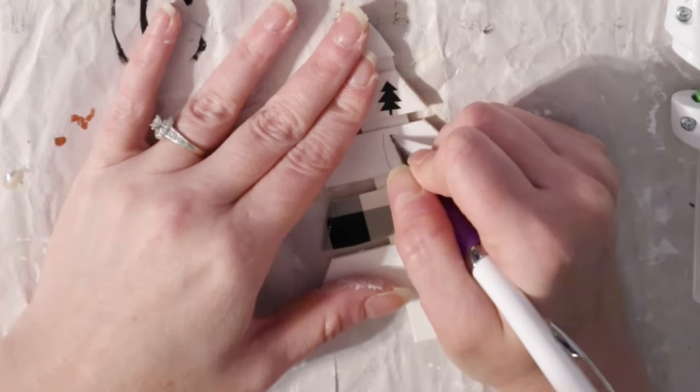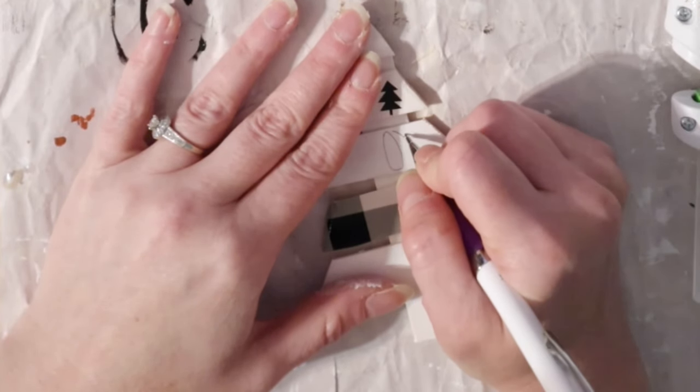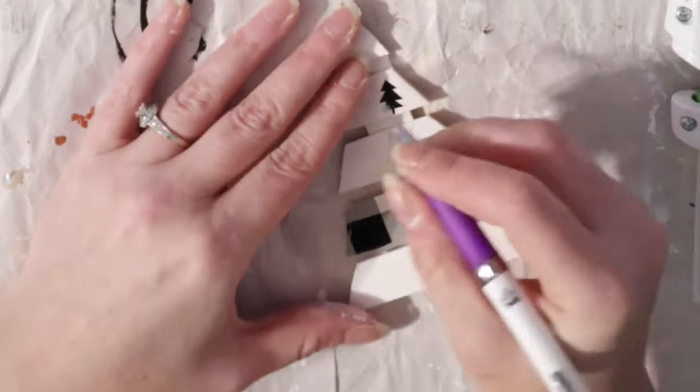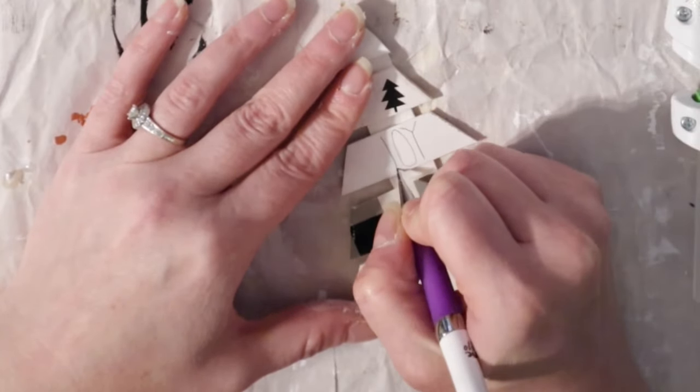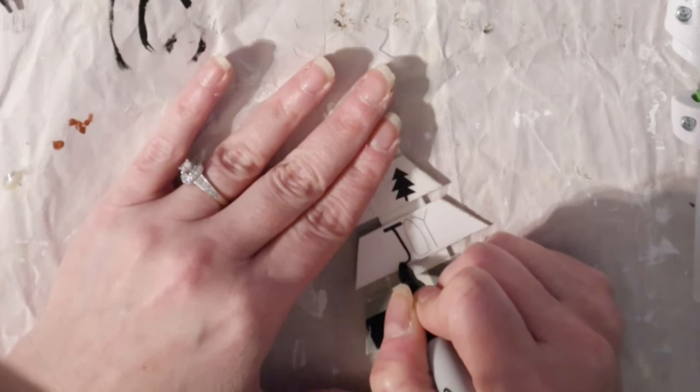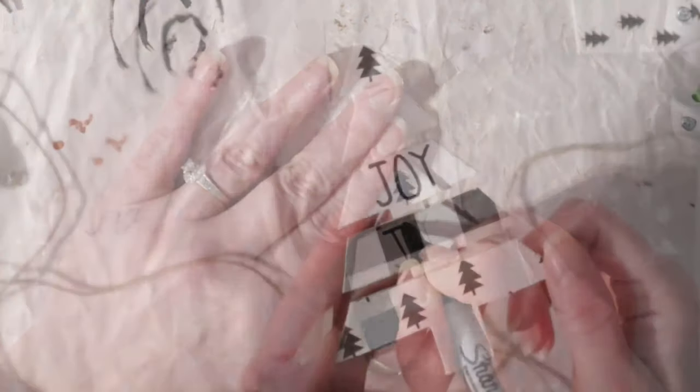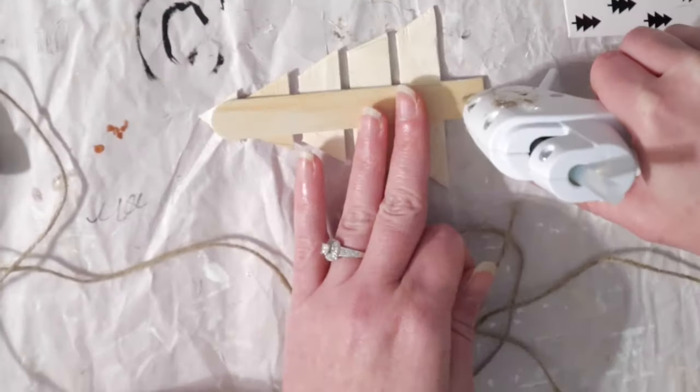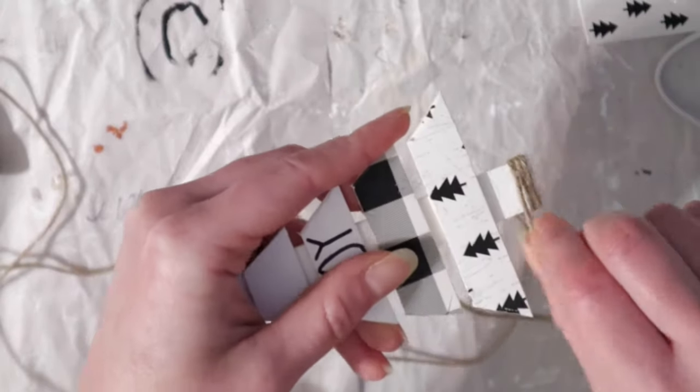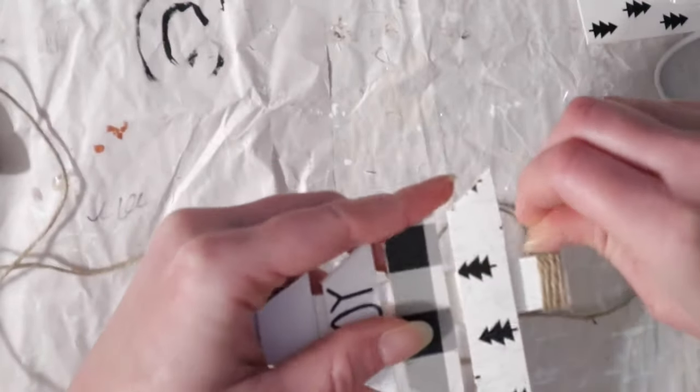I also decided to add some words to them using a pencil and then going over it with a black Sharpie, but this is totally optional. Finally, I'm just wrapping the trunk with some twine and hot gluing a piece to the back for hanging.